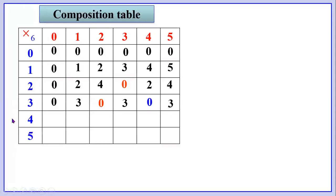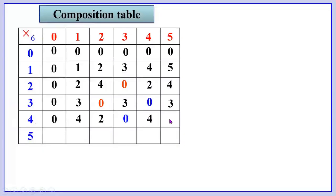Now let us fill the row headed by number 4. 4 into 0 is 0, 4 into 1 is 4, 4 into 2 is 8 — when 8 is divided by 6, the remainder is 2. 4 into 3 is 12 — when 12 is divided by 6, the remainder is 0. 4 into 4 is 16 — when 16 is divided by 6, the remainder is 4. 4 into 5 is 20 — when 20 is divided by 6, the remainder is 2.